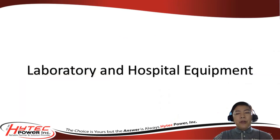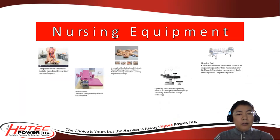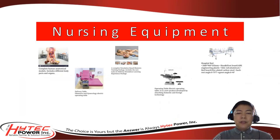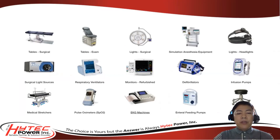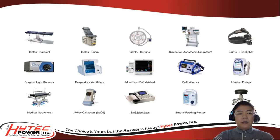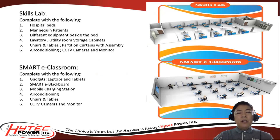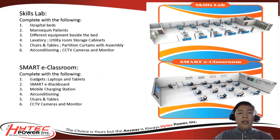We also provide laboratory and hospital equipment such as human anatomical models, delivery tables, birthing and mannequin simulators, operating tables, hospital beds, ventilators, ECG machines, defibrillators, infusion pumps, surgical tables, enteral feeding pumps, and many more. We can also provide a complete skills laboratory with hospital beds, mannequin patients, equipment beside the bed, laboratory, utility room, storage cabinets, chairs and tables, partition curtains with assembly, air conditioning, CCTV cameras, and monitors.